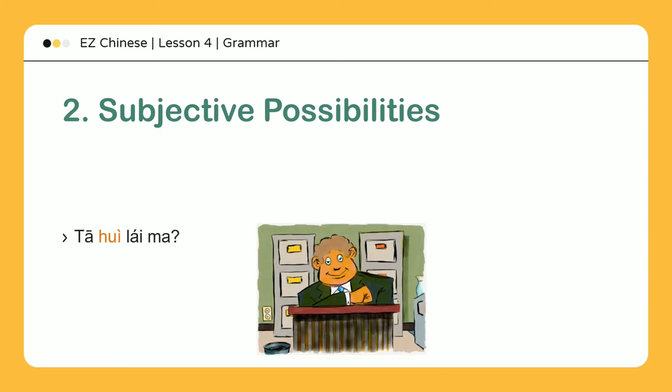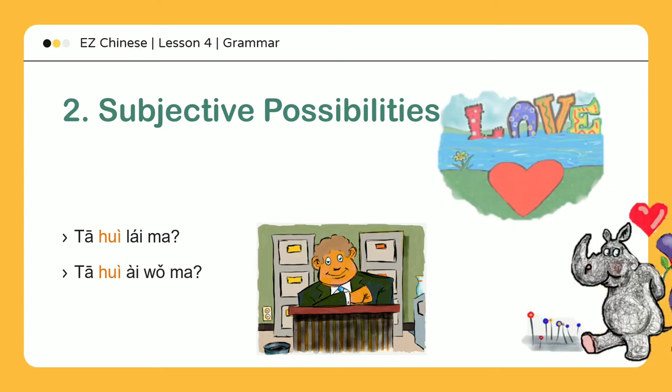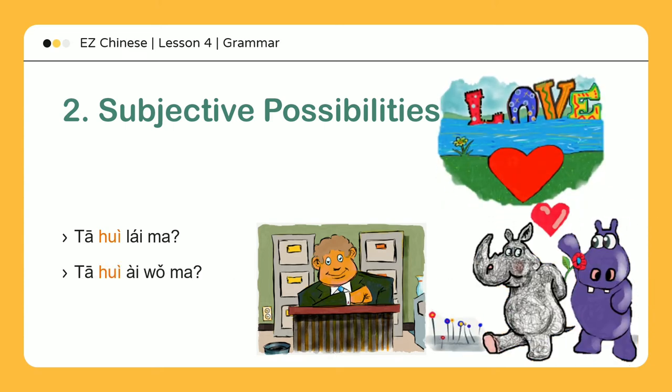Subjective possibilities. 她会来吗? — Will she come? 她会爱我吗? — Will she love me?